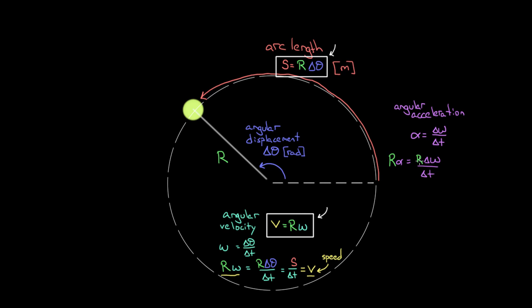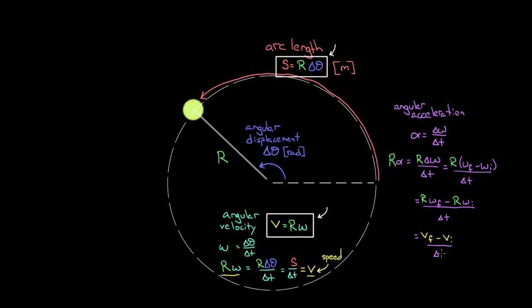On the right-hand side, r·Δomega is r times (omega_final minus omega_initial). Distributing r gives (r·omega_final minus r·omega_initial) divided by delta t. Since r·omega equals speed, this becomes (final speed minus initial speed) divided by time — the change in speed per time.